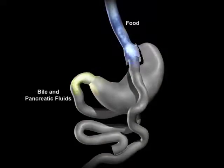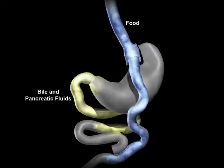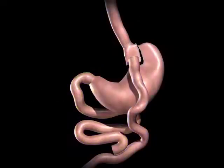The bile and pancreatic fluids from the liver and pancreas allow food to be completely digested. By altering the anatomy of the gastrointestinal tract, gastric bypass changes signals in the body.